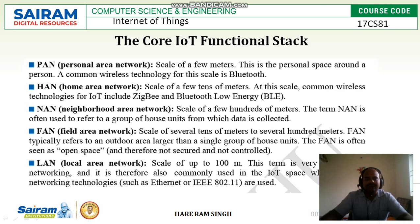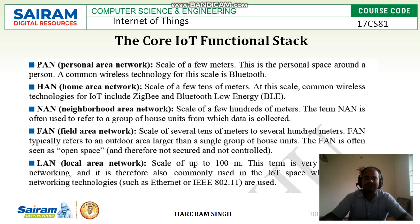Then there is NAN, the Neighborhood Area Network, at a scale of a few tens to a few hundreds of meters. The receiver of this object can be a few hundred meters — around 100 meters or 200 meters. Such a network where objects at that range can be detected is called the Neighborhood Area Network.